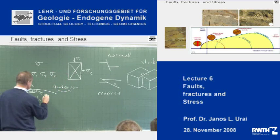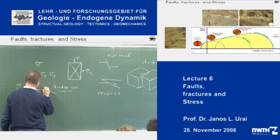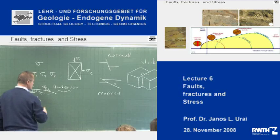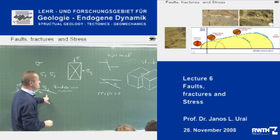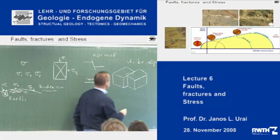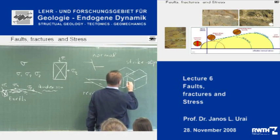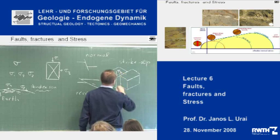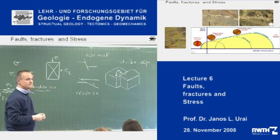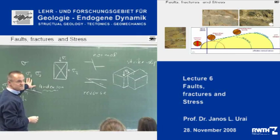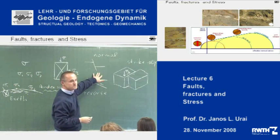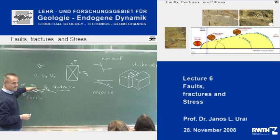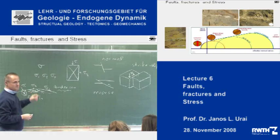The third case is that sigma 2 is vertical, and then it is a little more difficult to draw. In the case of strike-slip faults, sigma 2 is the one which is vertical. So: three principal stresses, three major kinds of faults, the reason being that the surface of the earth has one of the principal stresses vertical.